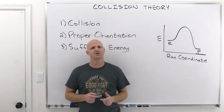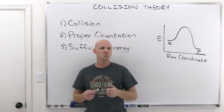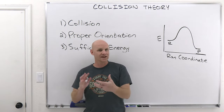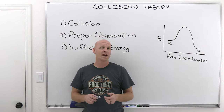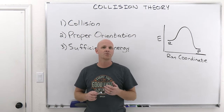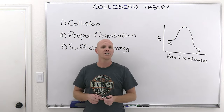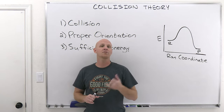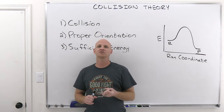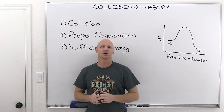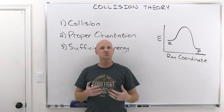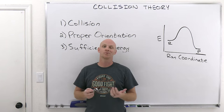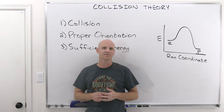We're going to start off with collision theory, which gives us a conceptual understanding of the requirements that need to be met at the molecular level for a chemical reaction to take place. Then we'll finish with the Arrhenius equation, which shows the dependence of the rate constant — that lowercase k — on both the activation energy and the temperature. We'll get a conceptual understanding, put it in a mathematical description, and work through some calculations.